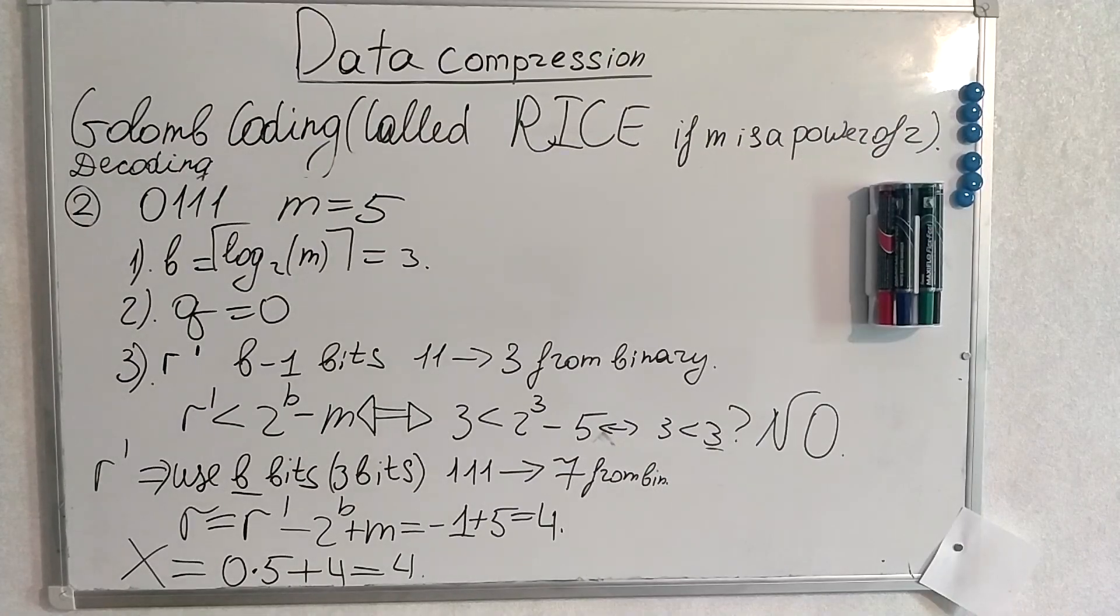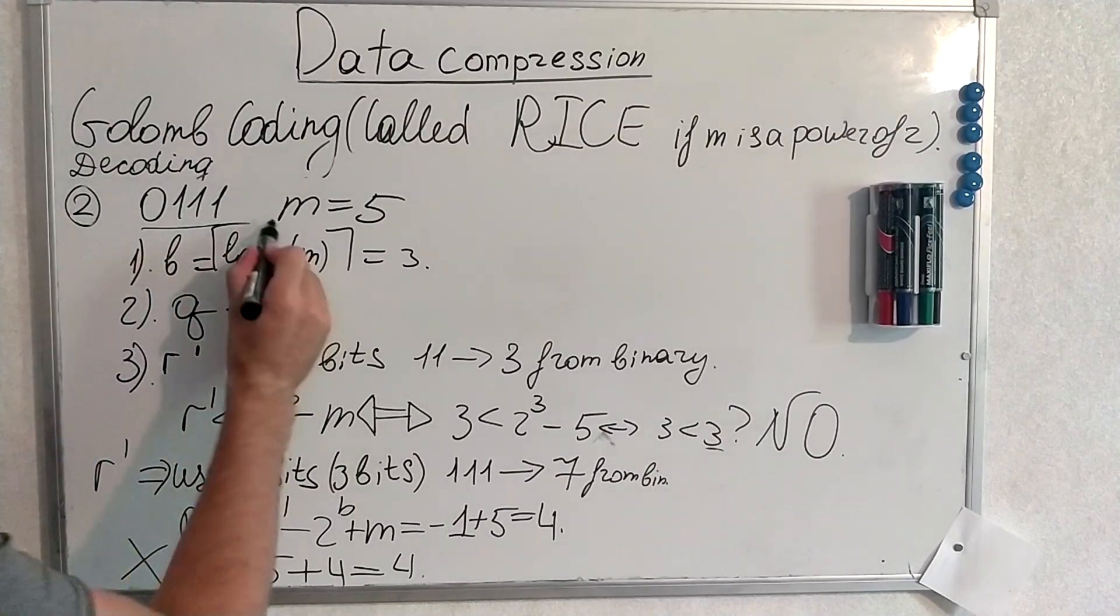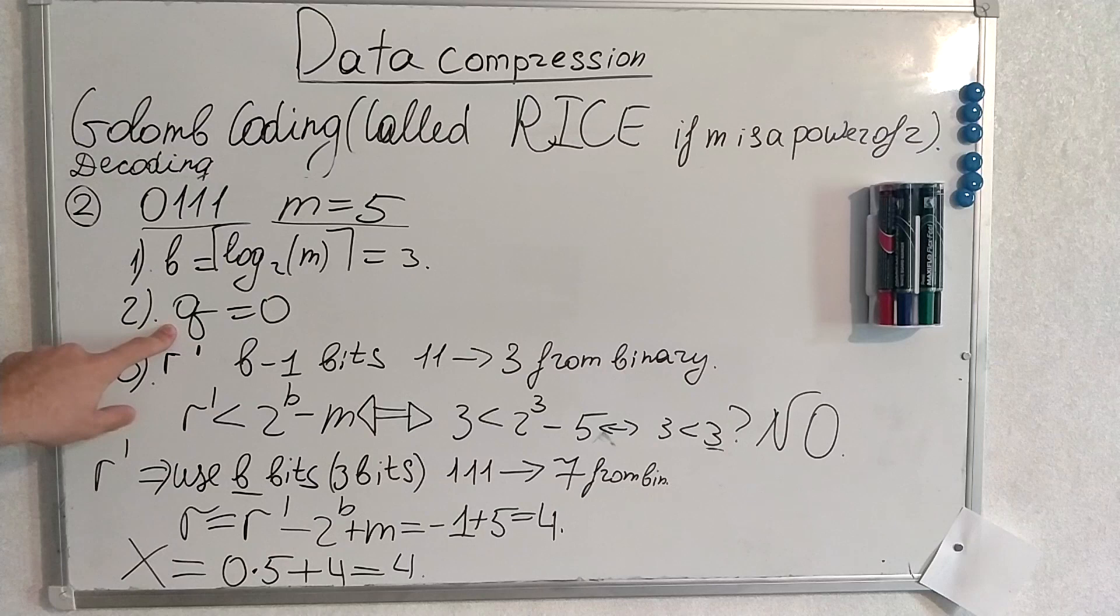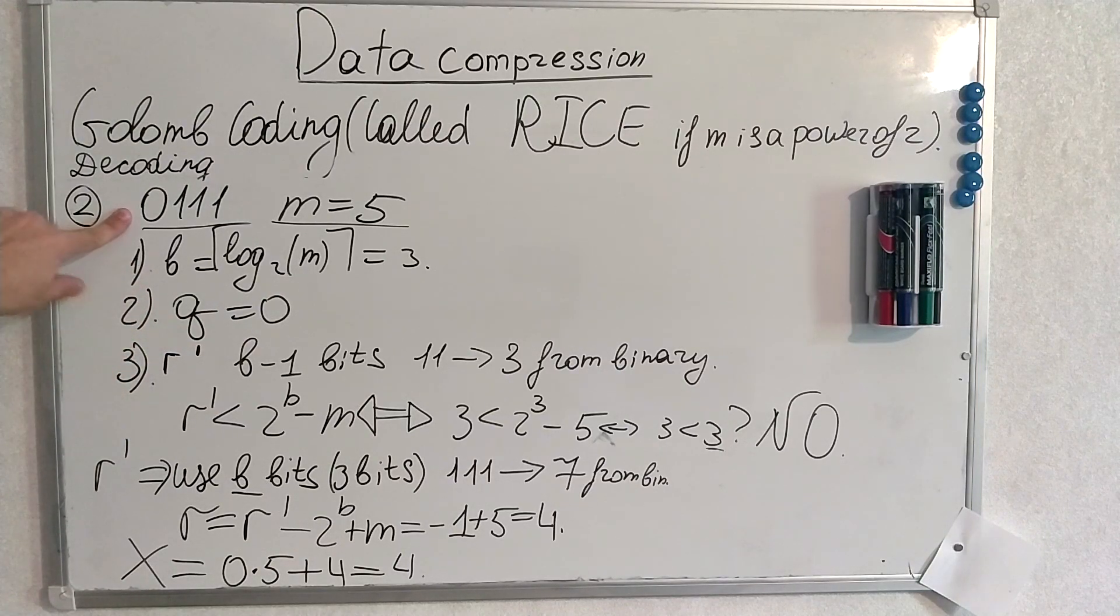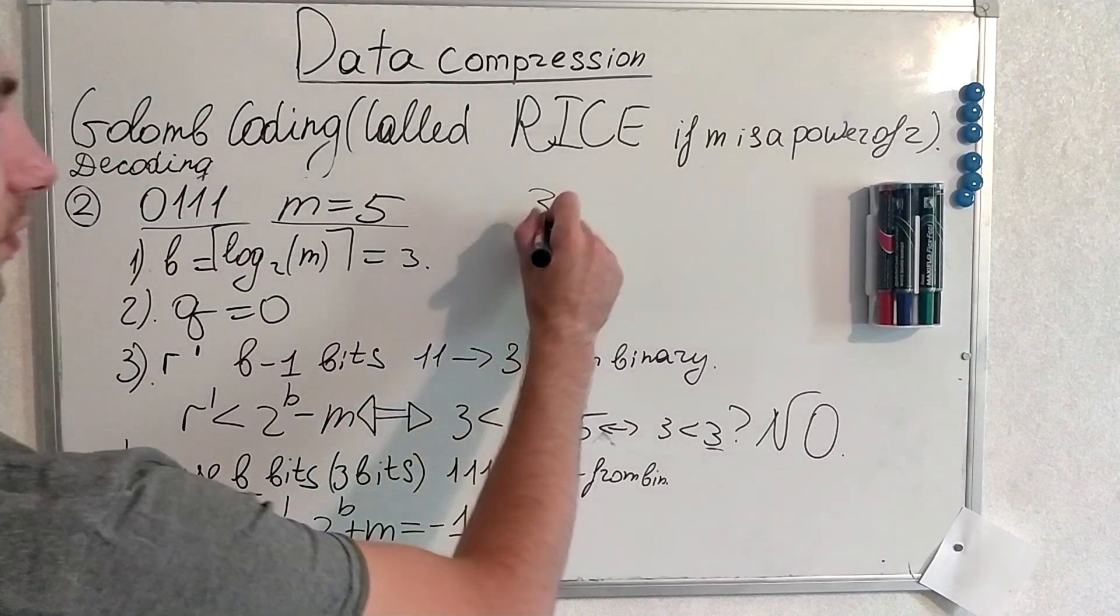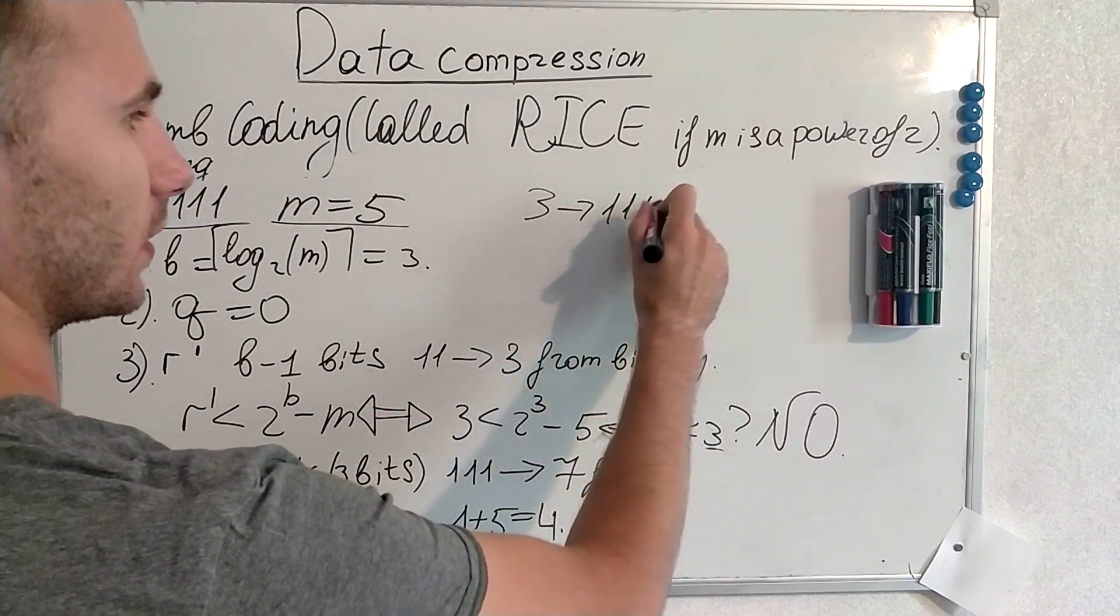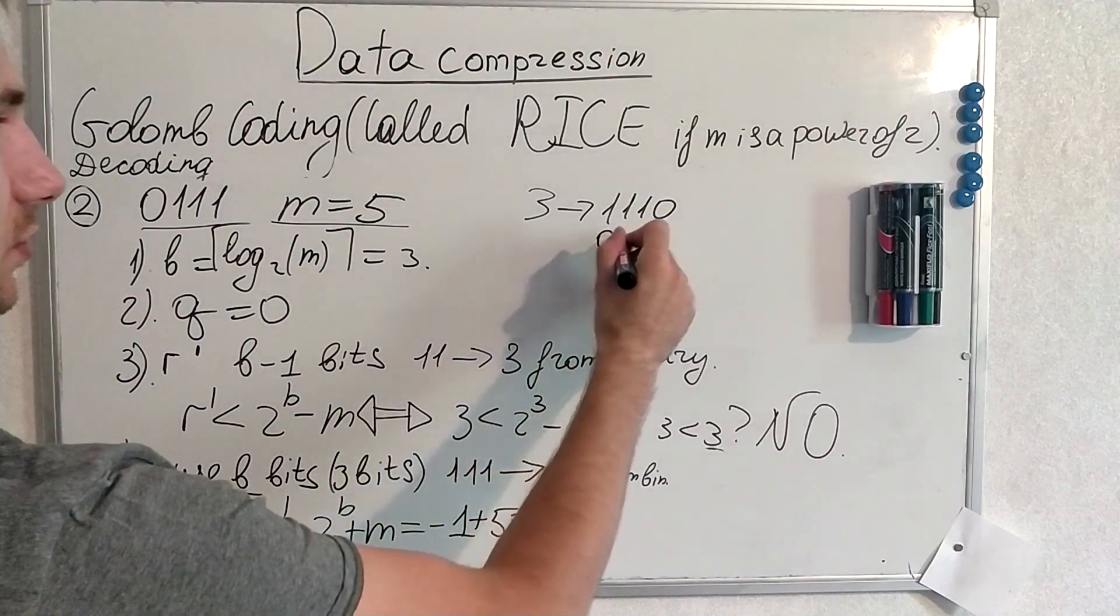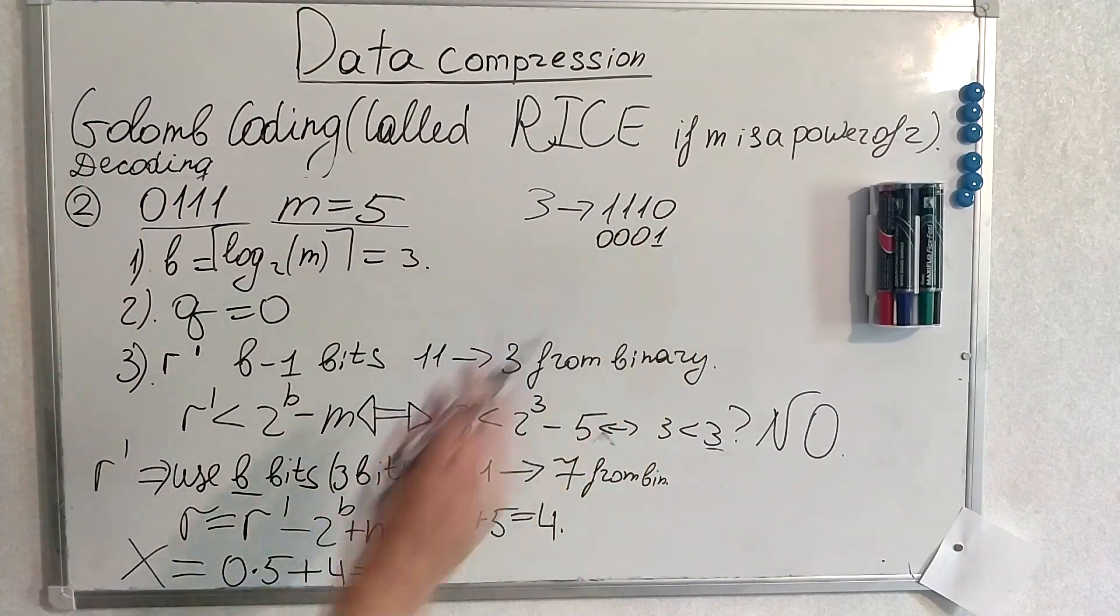And another example. We are given this code and this m. We calculate b in a similar fashion. We look at the q. We are trying to understand what's q. We have here 0. We know which way of unary coding we use in Golomb coding. This is number 3 will be represented 1, 1, 1, 0. This is this way of binary coding. Because there are also 0, 0, 0, 1. This way exists. We use here this way.